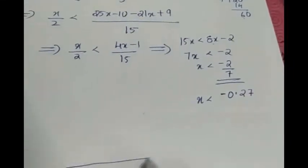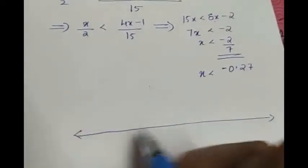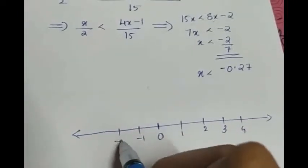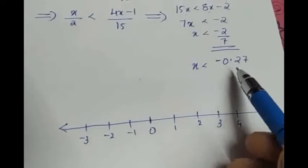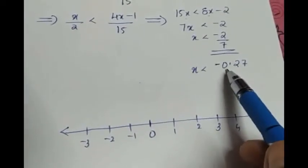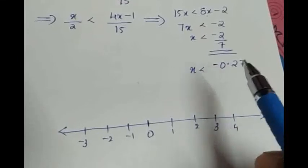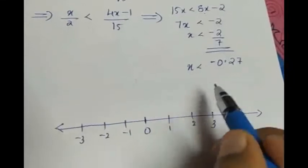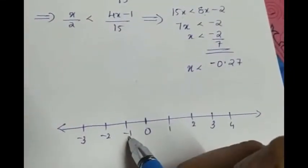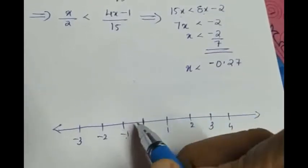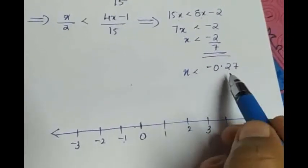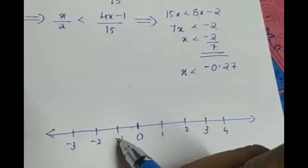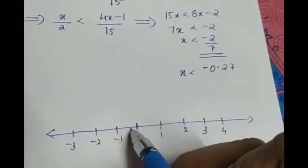Again we have to represent the graph. Draw a number line. Mark the middle as 0, 1, 2, 3, 4 like that. Towards the left: minus 1, minus 2, minus 3, etc. First you have to identify where it lies. Minus 0.27 lies in between which two integers? It's a number less than 0 and greater than minus 1. 0.27 will be nearer to 0. If it was minus 0.72, it would be close to minus 1. Since it is 27, it will be nearer to 0.